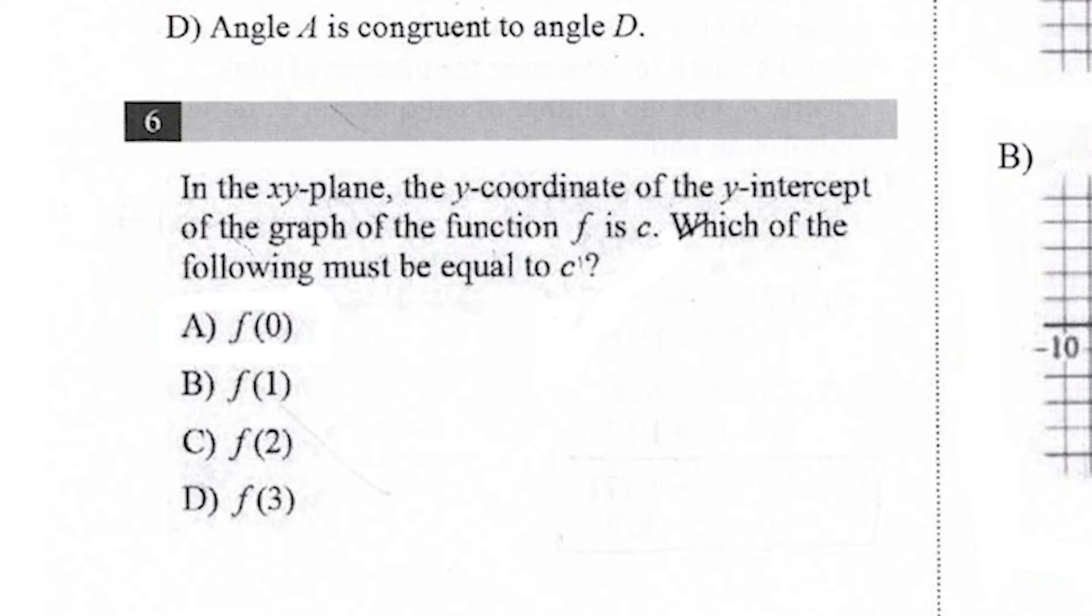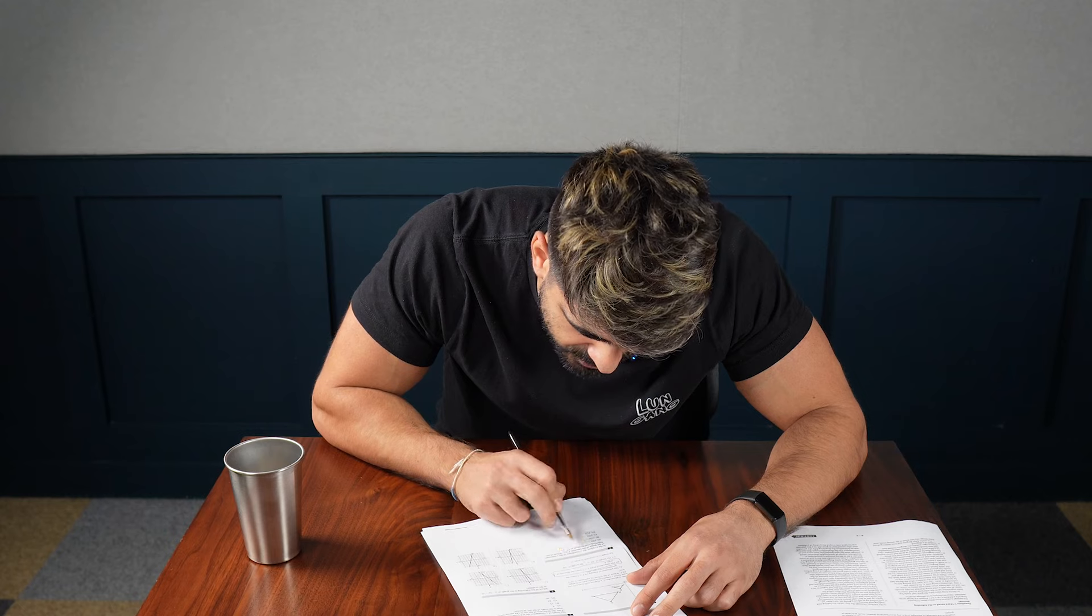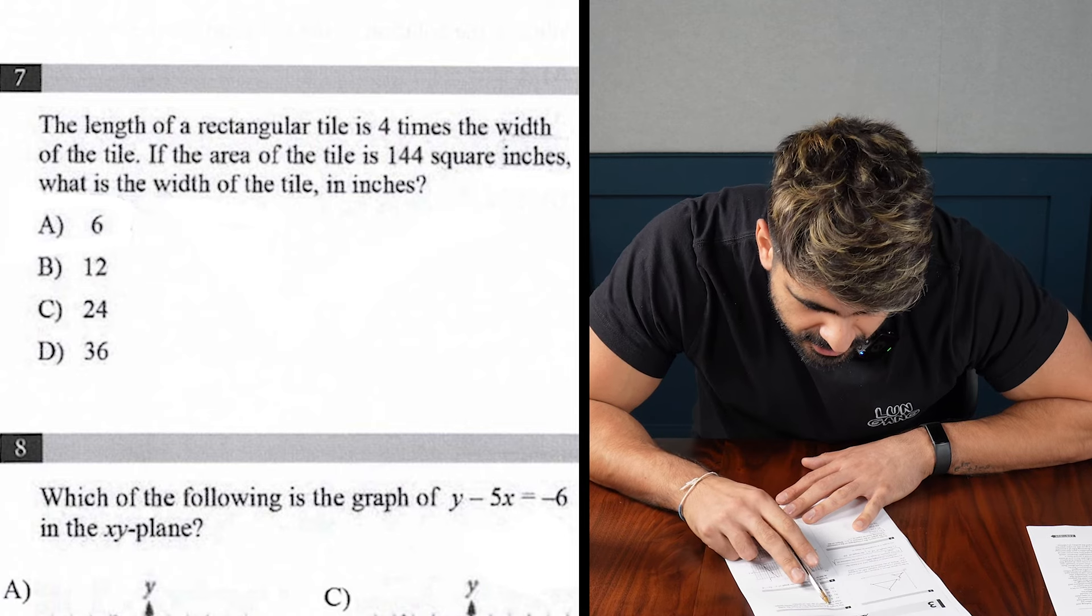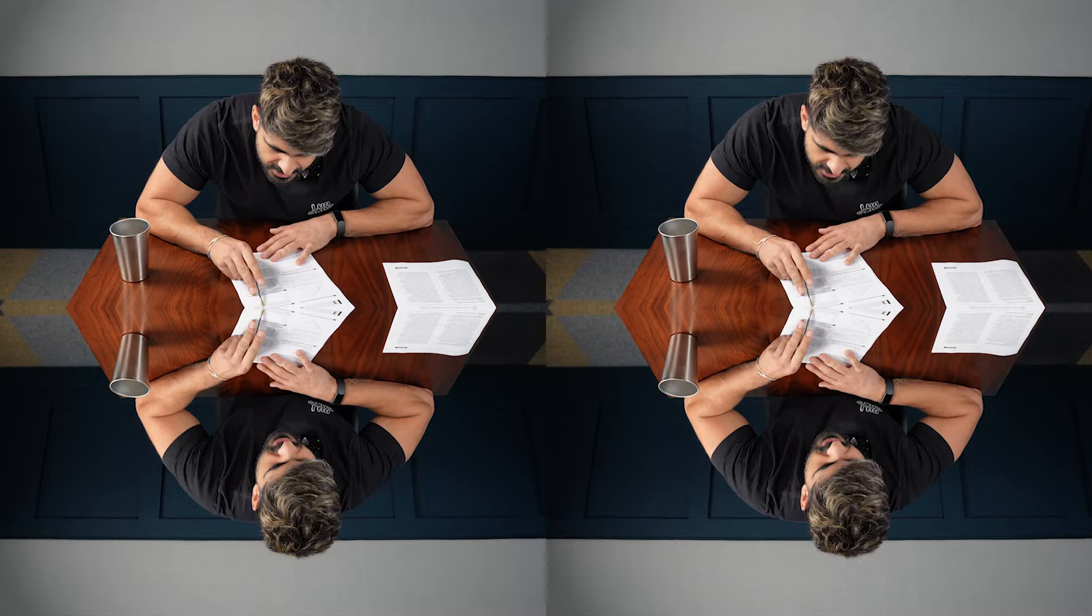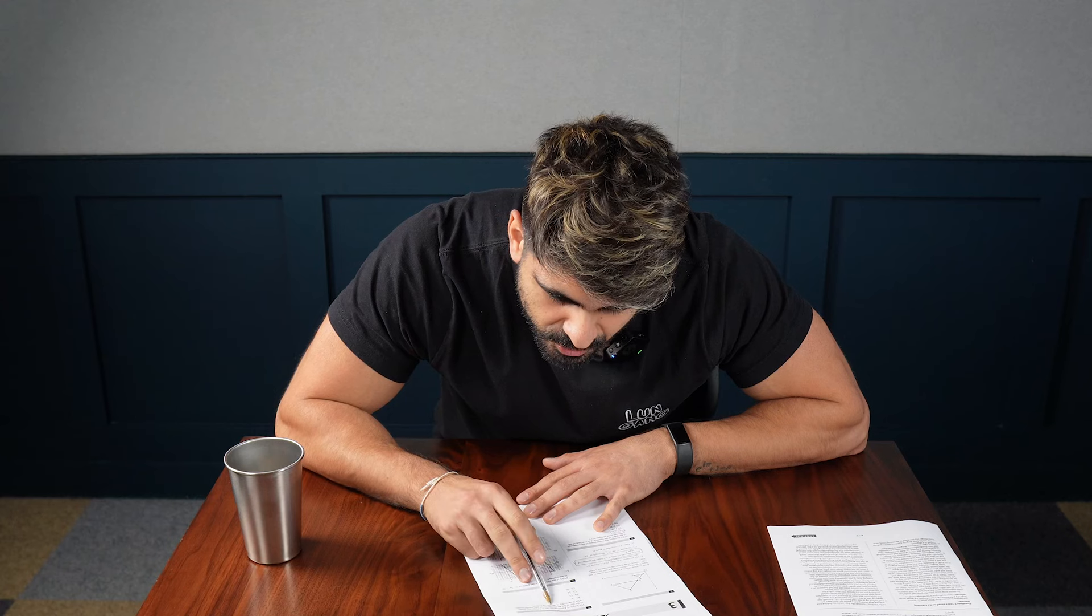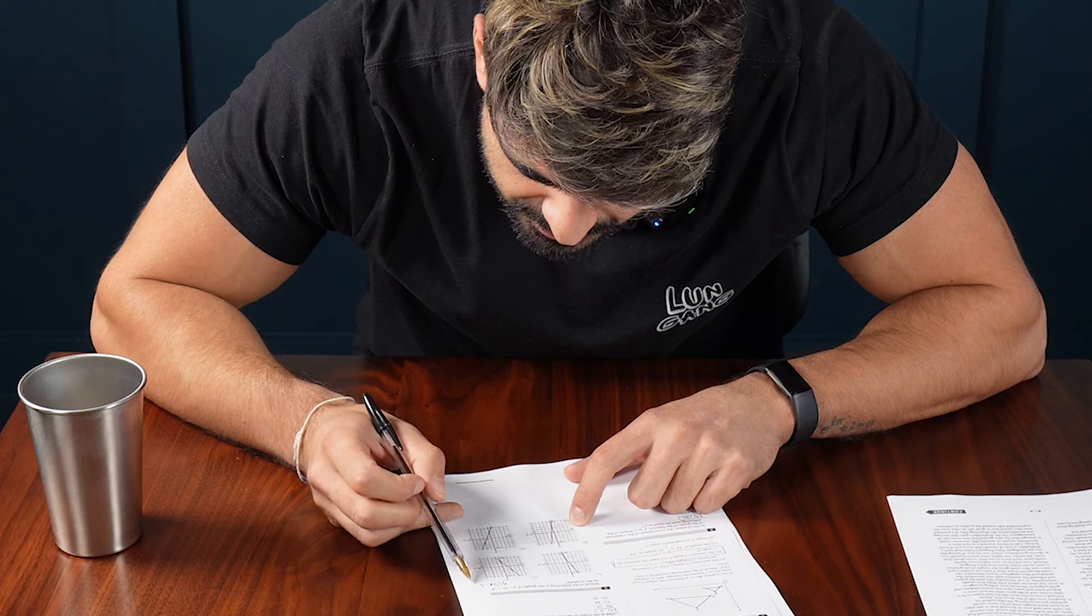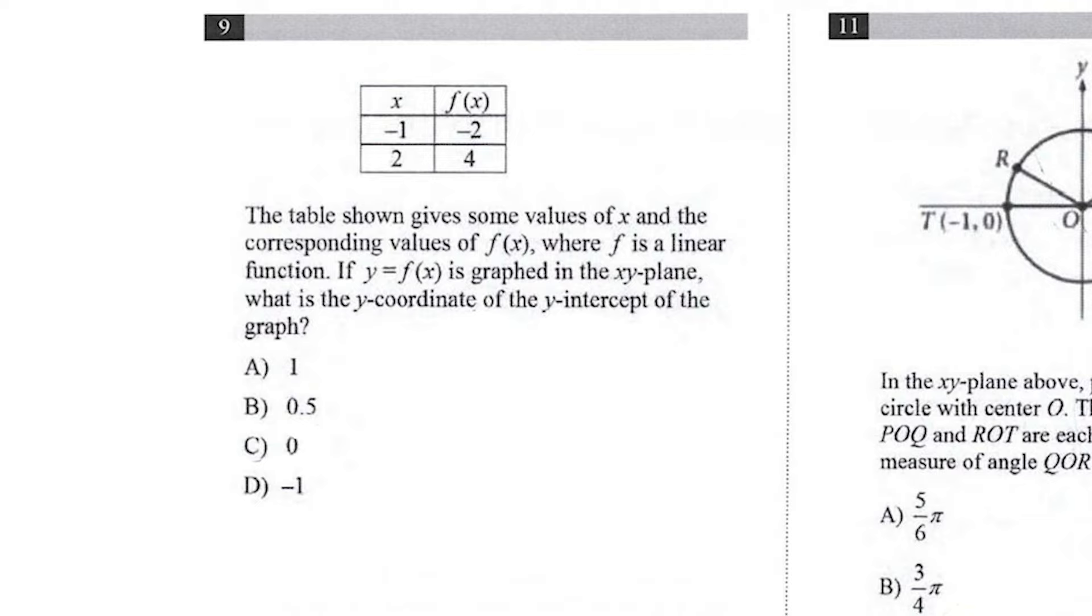In the exponent, the y-coordinate of the y-intercept of the graph of the function F is C. Which of the following must be equal to C? Just F of 0, right? The length of a rectangular tile is 4 times the width. If the area is 144, what is the width? X is 6. Which of the following is the graph of y minus 5x minus 6? So it's B. Easy, it should be 3.